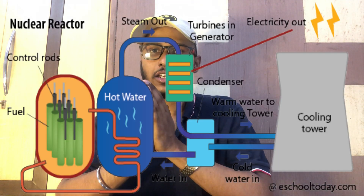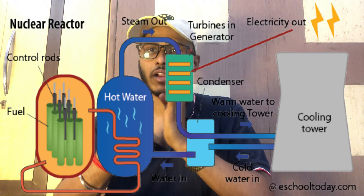The next category of conventional sources is nuclear energy. We normally use uranium — it is called uranium. It is used in nuclear fission to generate heat, and that heat is used to produce steam, which drives a turbine for power generation.